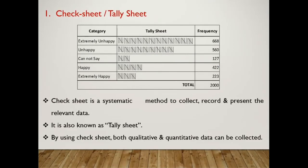Here the image you can see is a CheckSheet. It is also called a TallySheet. CheckSheet helps to gather and arrange data systematically. For our case, we have counted the frequency of occurrences for each high-scale rating and generated this tally sheet. By using CheckSheet, both qualitative and quantitative data can be collected.